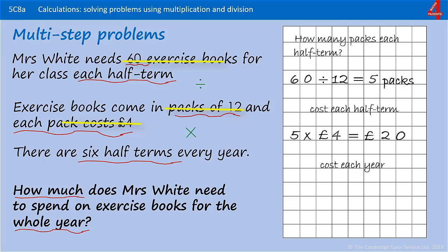Each half term she spends 20 pounds. There are six half terms, so we need to multiply those together — 20 times by 6. And if you remember that 2 times 6 is 12, you should be able to work out that 20 times 6 is 120. Just check that we've done everything we need to do and that we have answered the question. Mrs White spends 120 pounds each year on exercise books.